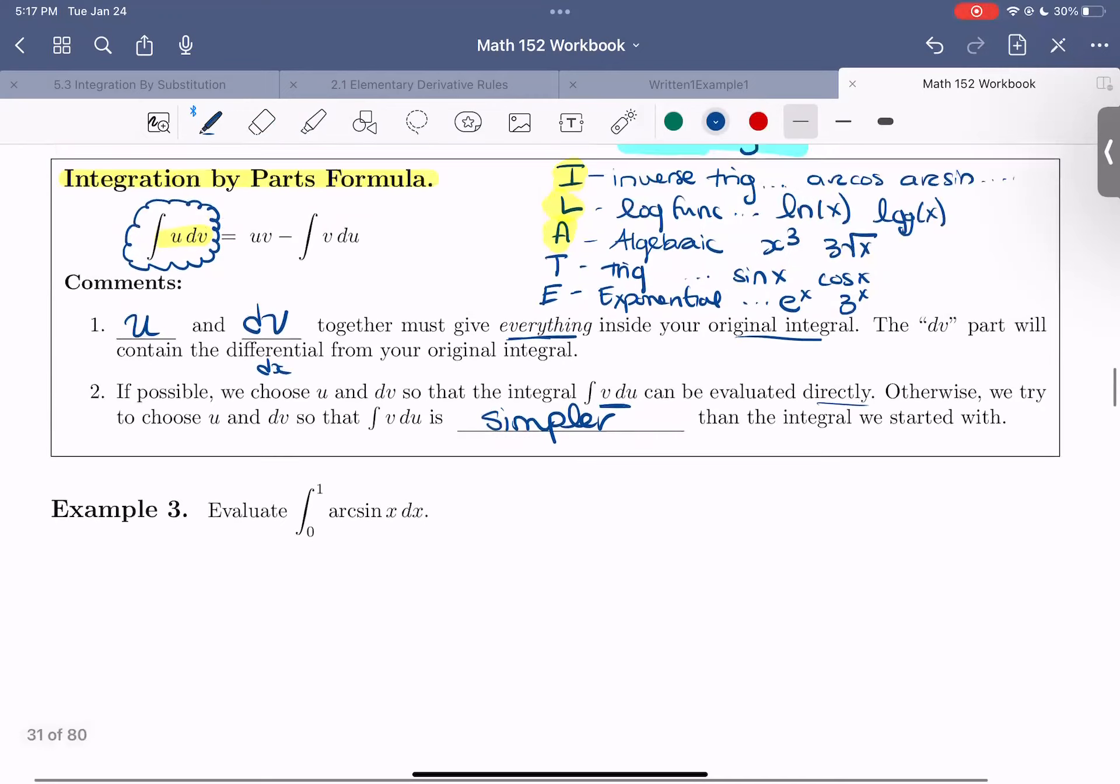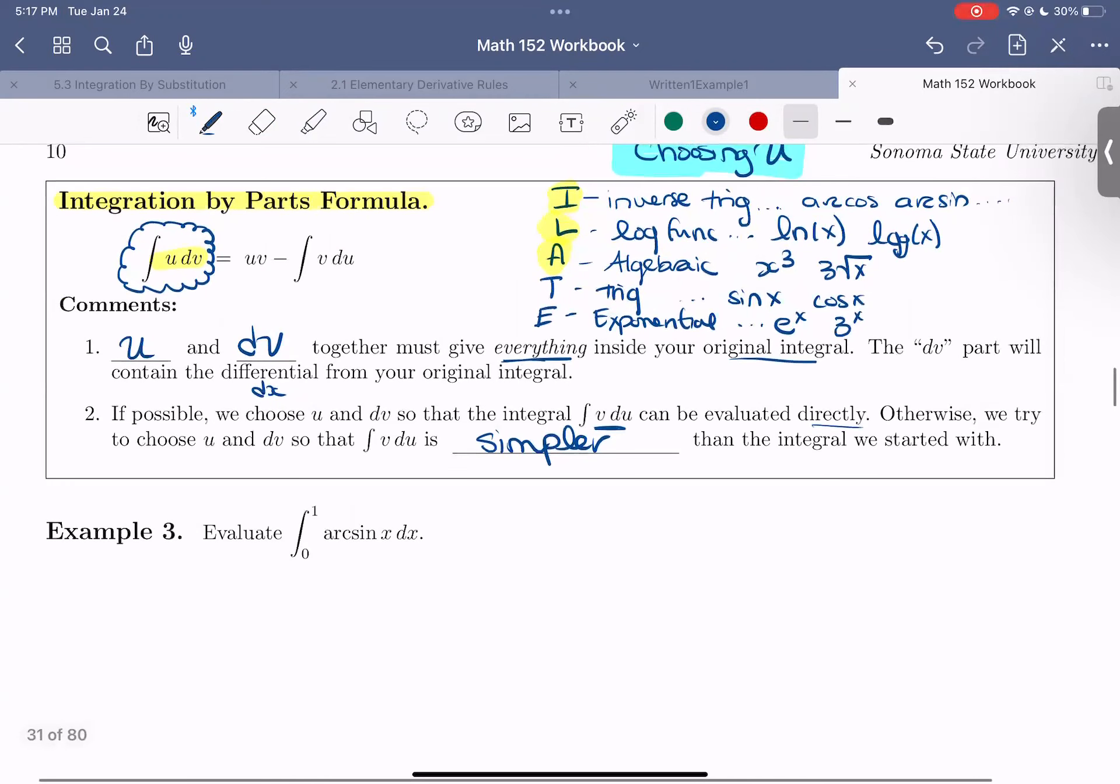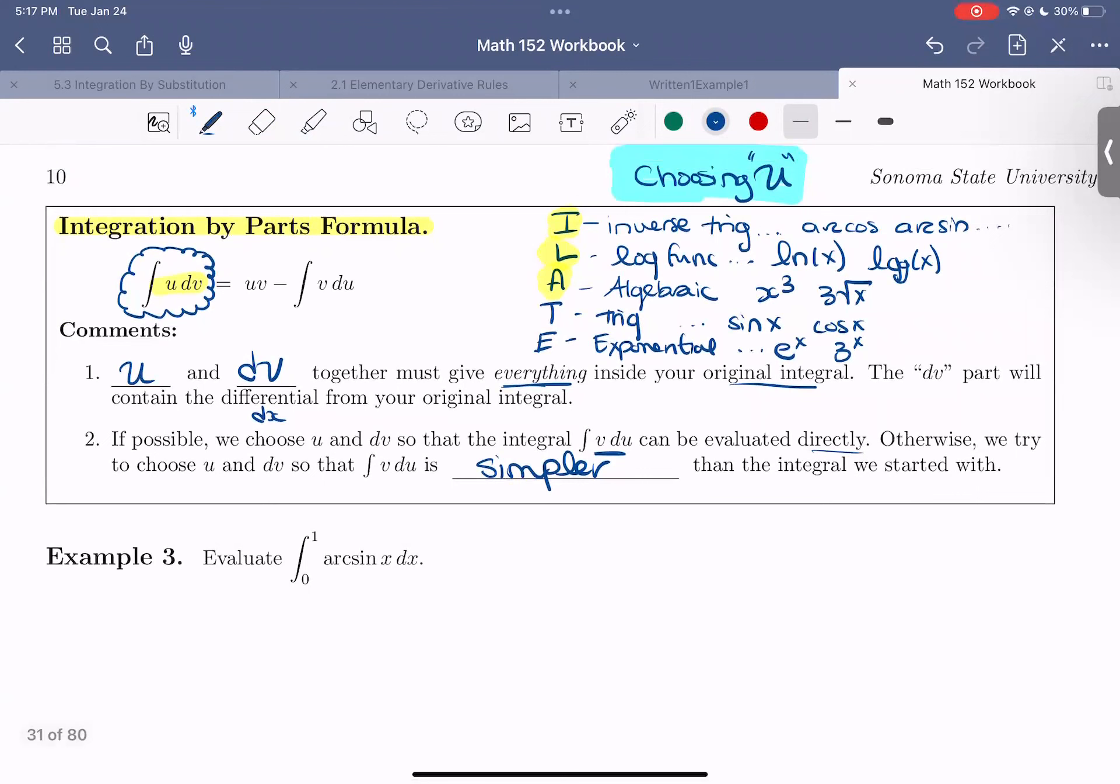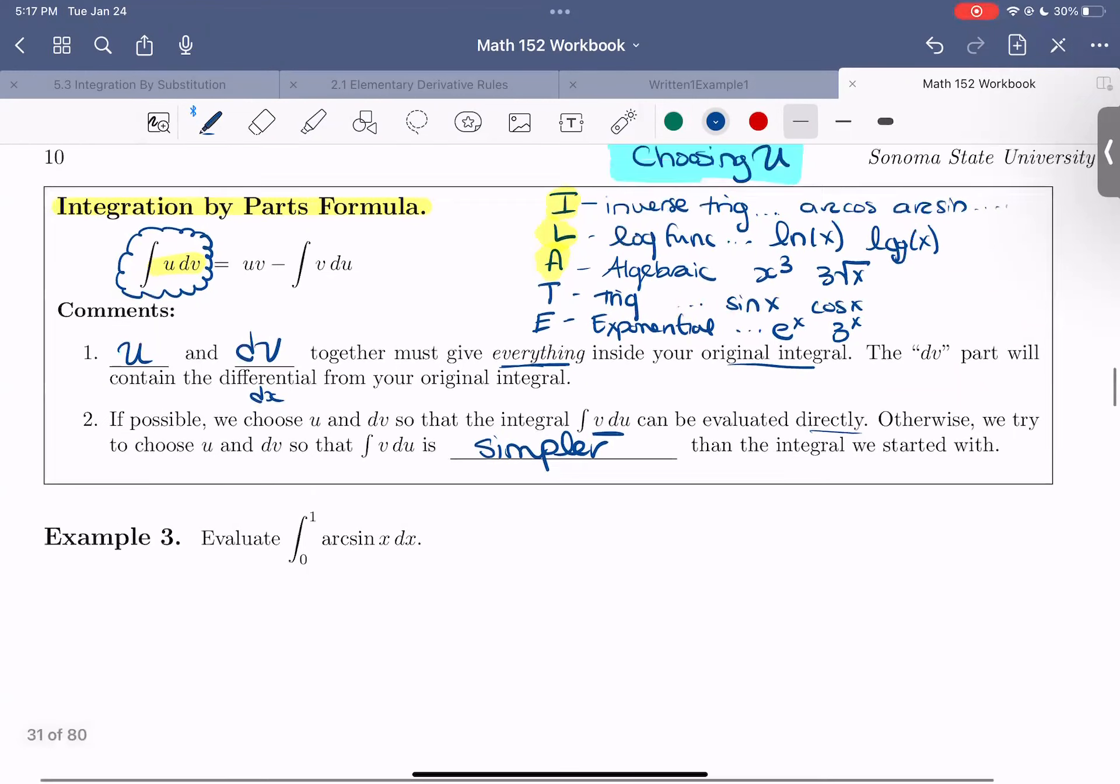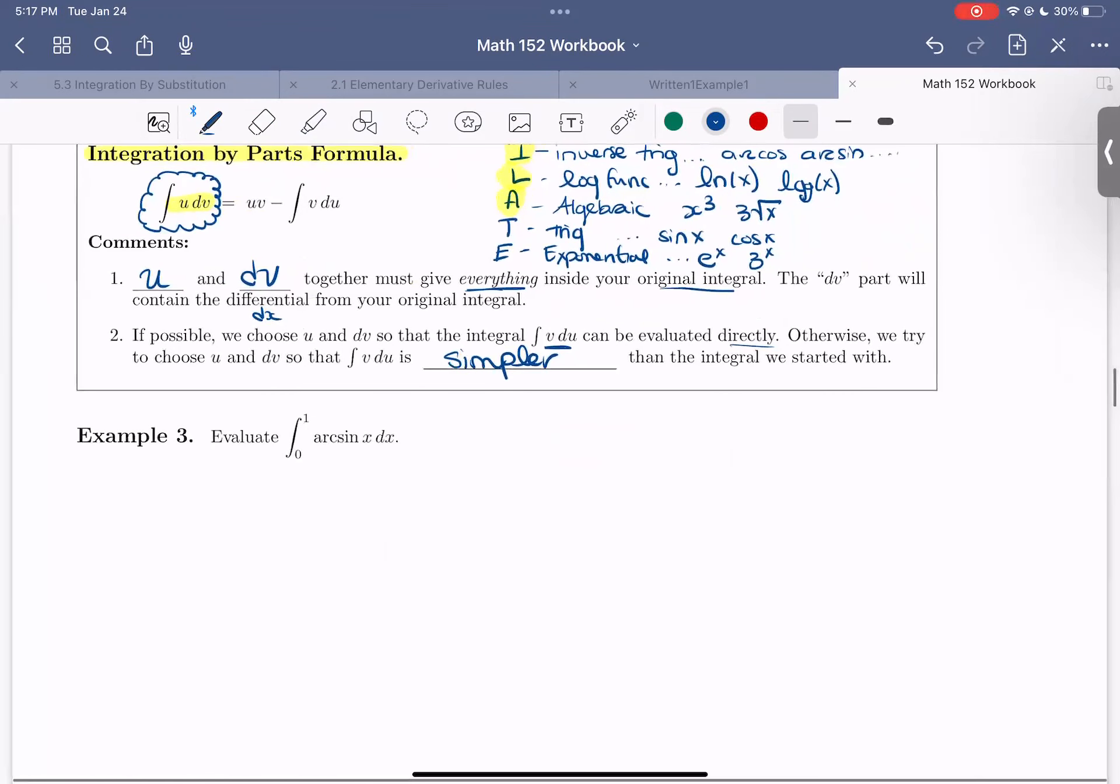So what we can do is follow this i-latte, or i-late, I don't know, you can say however you want, for choosing u. So we see that we have an inverse trig function. So let's go ahead and use that for u. So I'm going to let u equal arc sine of x. So then my dv is going to be dx.